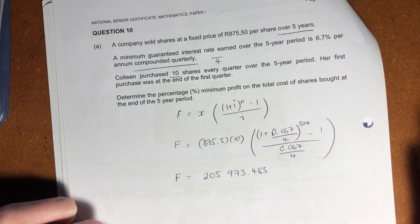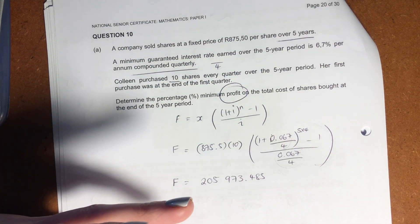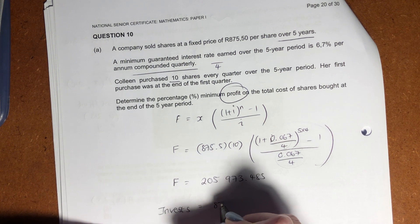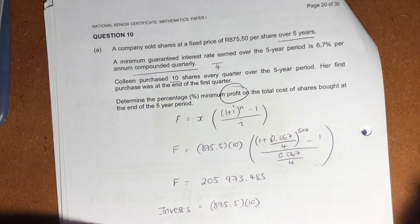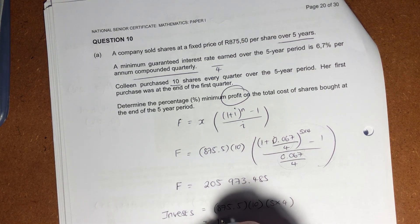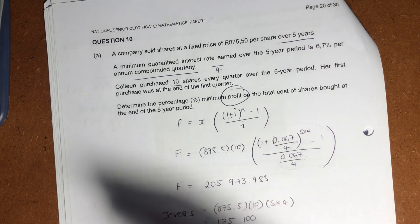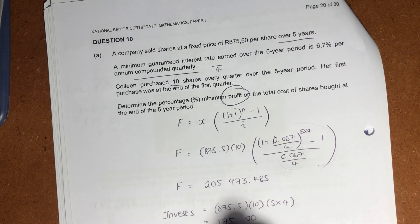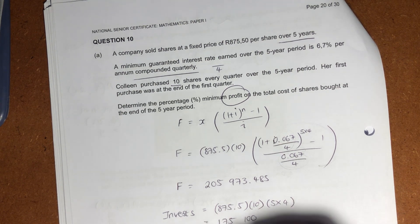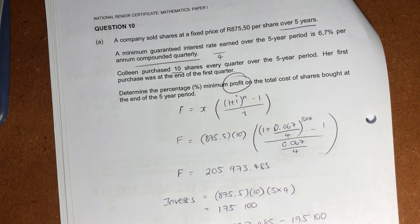But now we need to say, well, this is what she gets at the end. That's not necessarily her profit. And they've asked here specifically about profit. So we need to make sure and say, okay, well, how much did she invest in and how much of this is profit? Well, we know that what she invests would be the 875.5 times by 10. That's what she does every quarter. And how many quarters were there? Five times four. So you put that into your calculator, and that will give you 175100. So that's what she invests. This is the total return including her initial investments, her installment investments. So her profit is just going to be the 205973.485 minus what she's actually put in because that's your profit. If you put that in your calculator, it will give you 30873.485. So that's her profit.